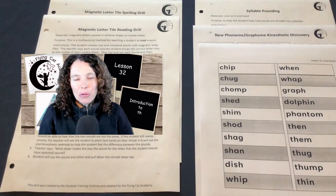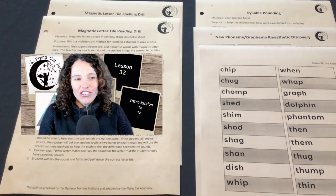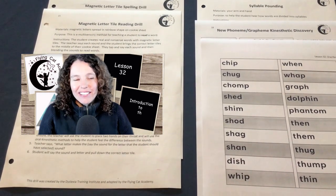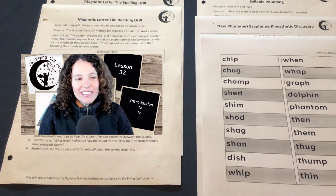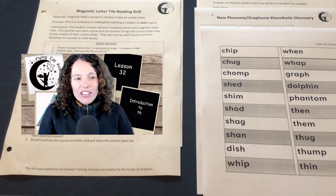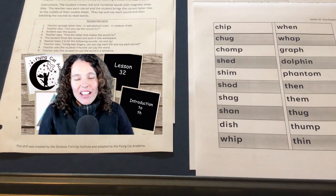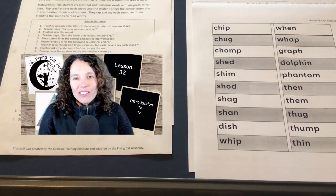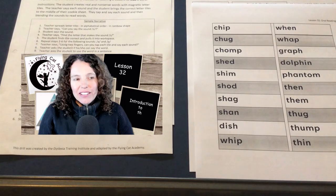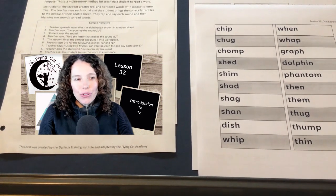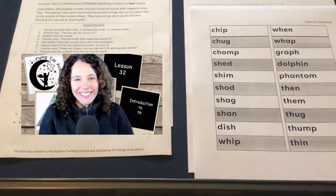I like to use a different color for each syllable, so all the syllable ones are in blue and all the syllable twos are in yellow — you can follow that or do whatever color you like. Then we'll have the magnetic letter tile drill instruction sheets for reading and spelling, and that goes with the cookie sheet with the letters spread in a rainbow shape. Then we've got the syllable pounding instruction sheet, the kinesthetic discovery sheet, and the sheets that go with the lesson: the isolated word list, the story, and the sentences for the writing section.